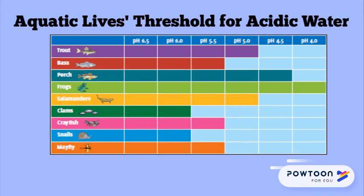This chart represents aquatic animals and their ability to survive under acidic water conditions, ranging from a pH of 6.5 to a pH of 4. The blue part of the chart shows that as pH decreases, fewer animals can survive.